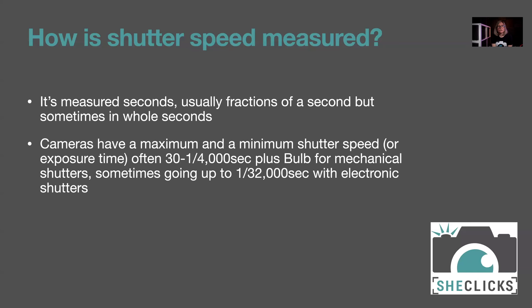With electronic shutters, the exposure can go up to something like one thirty-two-thousandth of a second — an incredibly fast shutter speed useful for freezing split-second moments like water splashes. It can also be helpful to go beyond one four-thousandth when using a really wide aperture lens shooting wide open in bright sunny conditions.